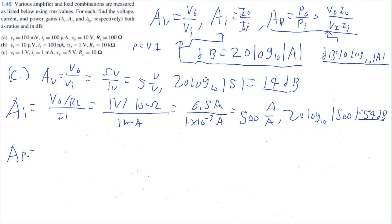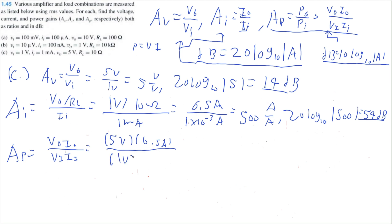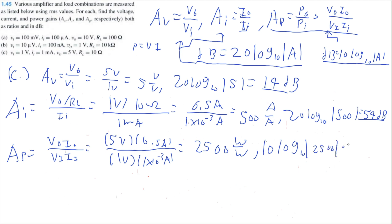Lastly, our power gain is output voltage times output current divided by input voltage times input current. That's 5 volts times 0.5 amps divided by 1 volt times 1 times 10 to the negative 3 amps, equal to 2,500 watt per watt. Converting to dB: 10 times log base 10 of 2,500 equals 34 dB. That's all for this problem.